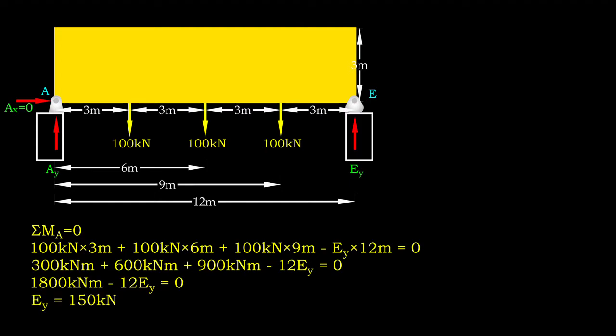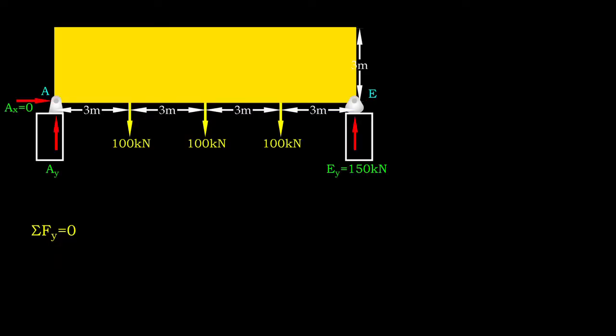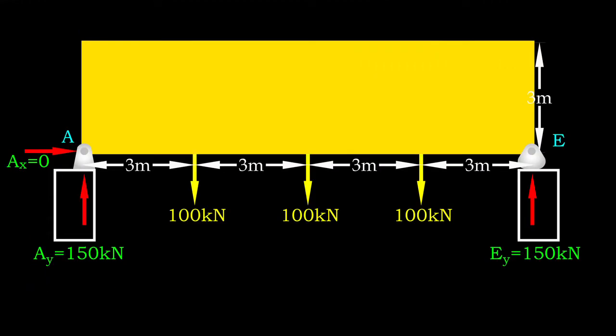Through calculation, we know EY equals to 150 kN. We know vertical forces are in equilibrium as well. Therefore, AY should be 150 kN. So, the supports can resist the loading.